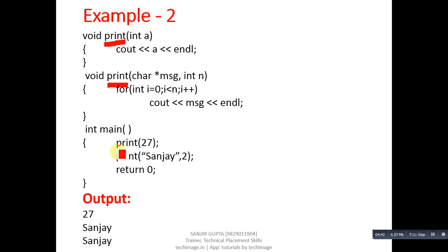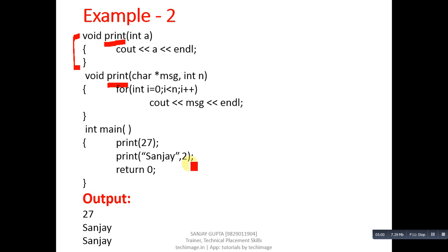In the main function, I have called the print function two times. The first call passes 27, so it will automatically link to the first definition. The second print function call has two arguments — 'sanjay' and 2 — so this call will link to the second definition because we are passing two arguments.